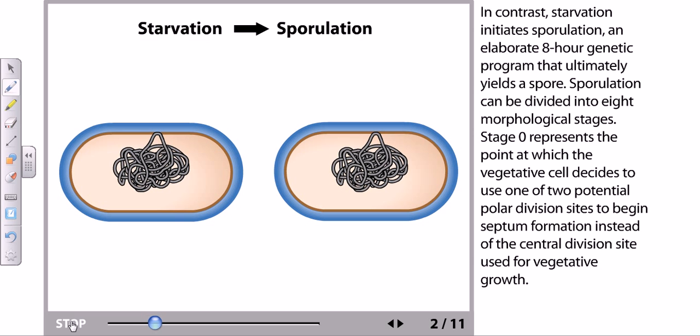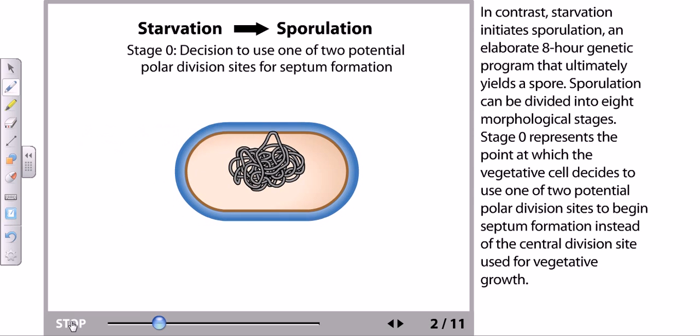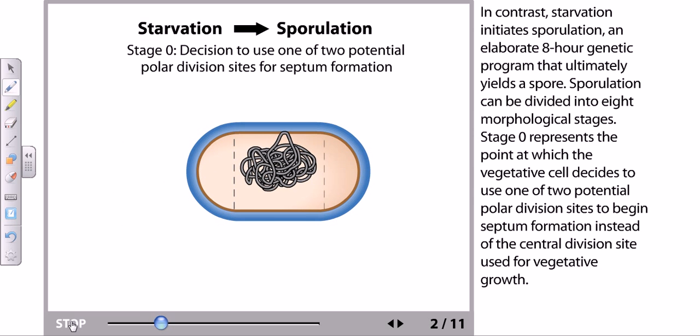First, stage 0 represents the point at which the vegetative cell decides to use one of two potential polar division sites to begin septum formation instead of the central division site that is usually used for vegetative cell growth.